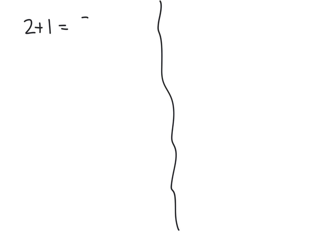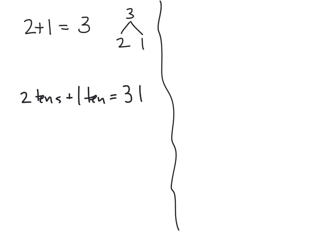Let's split this screen and start with two plus one. Students think: two plus one equals three. Our number bond would show that. Then, leading into the 10s place, we're going to think of this as two 10s plus one 10, and that equals three 10s.